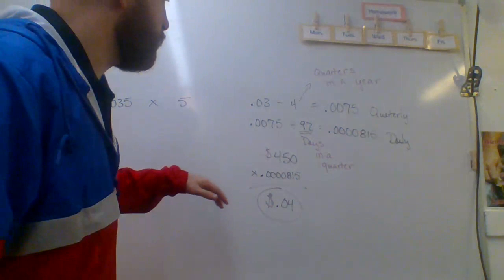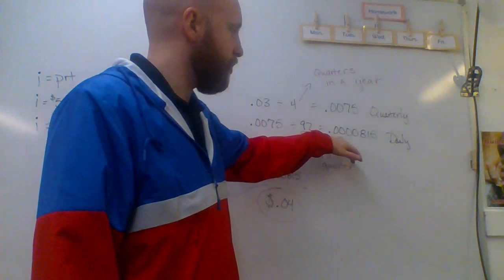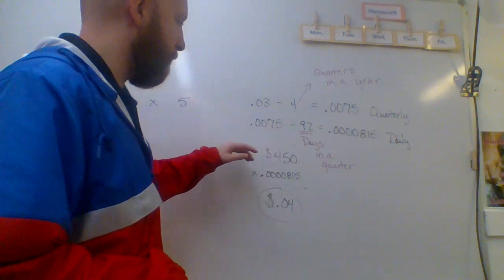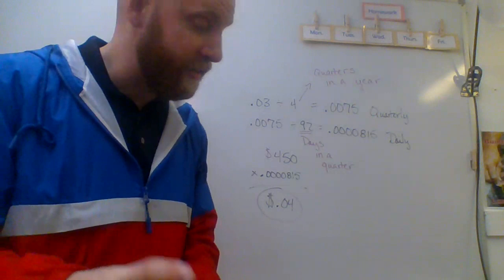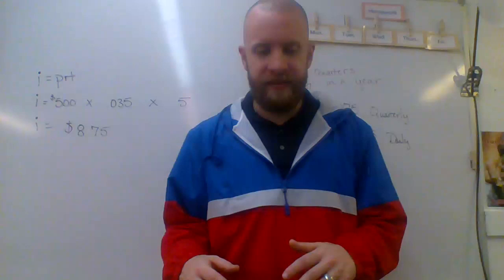So 0.0075 divided by 92 gives us our daily interest rate of 0.0000815. Now, we take that, we multiply that by the amount of deposit, which is $450, giving us the interest to the nearest cent of four cents, all right?